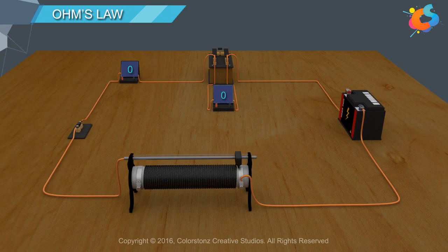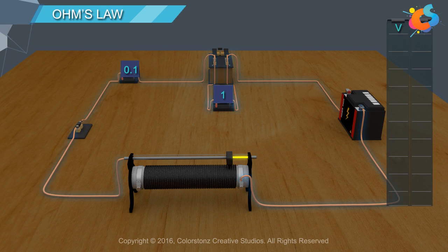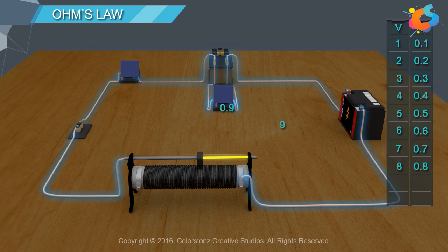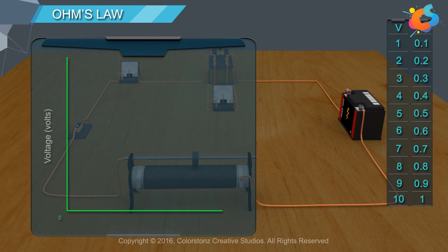Now, by sliding the pointer on the rheostat, gradually increase the applied voltage. The ammeter indicates the increase in current. Measure the reading of the ammeter for different values of applied voltage. Plot the graph of applied voltage versus current.